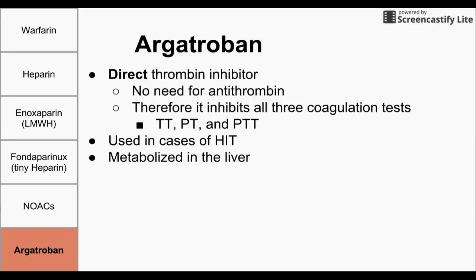Lastly, we have argatroban, which is also a direct thrombin inhibitor, meaning it binds directly to thrombin to inhibit it. Unlike heparin, there's no need for antithrombin. Argatroban affects all three coagulation tests, giving prolonged results on the TT, PT, and PTT. Argatroban is particularly useful in cases of heparin-induced thrombocytopenia, where you cannot use heparin, enoxaparin, or fondaparinux. It is also slightly unique in that it's metabolized and broken down in the liver, unlike some of the other drugs on this list.